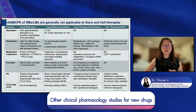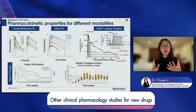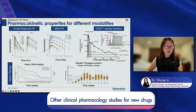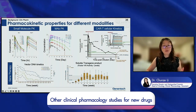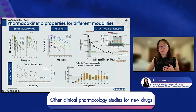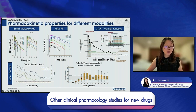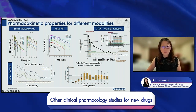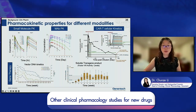Here I show typical PK profiles for different modalities. For small molecules, oral dosing shows a half-life in hours with exponential decay. For monoclonal antibodies, the half-life is in days. For CAR-T, you see distribution, expansion, contraction, and persistence for months to years. For gene therapy, the vector DNA kinetics in serum show an interesting curve shape, and viral DNA can be detected in different biofluids. The soluble transgene product can persist for years given stable transcription from episomal double-stranded DNA in the nucleus.